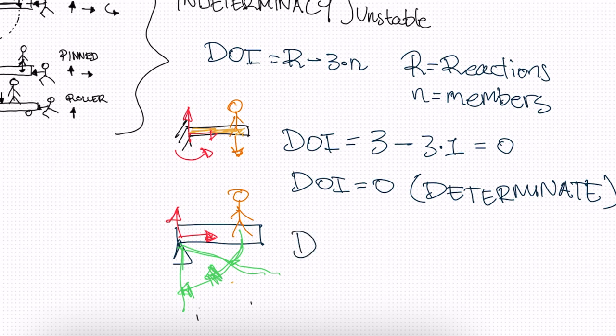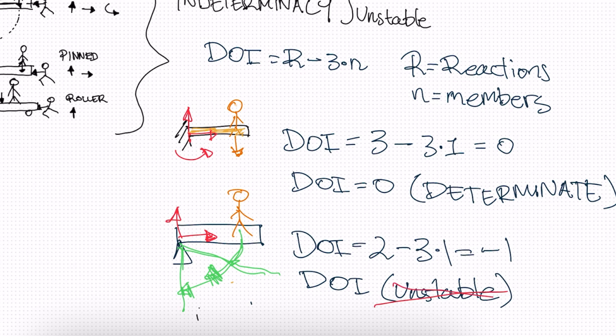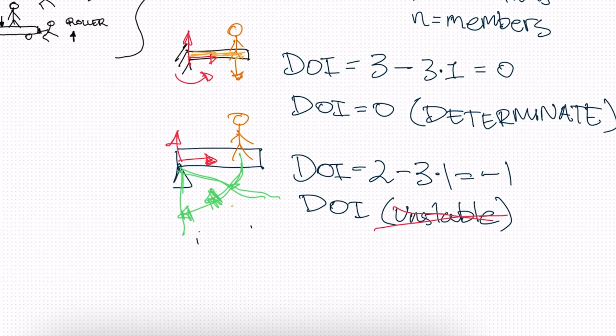Okay. So we can already tell, but if we use our equation, DOI is equal to two reactions minus three times one, which is equal to negative one. So in this situation, our DOI shows that it's unstable. You can't really do anything with an unstable beam. We can only work with stable beams.